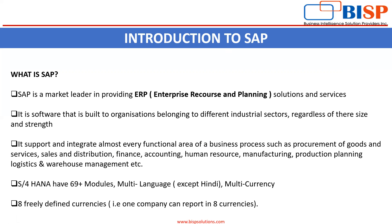SAP supports and integrates almost every functional area of business processes, such as procurement of goods and services, sales and distribution, finance, accounting, human resource, manufacturing, production planning, logistics, and warehouse management, etc. S4 HANA has 69 plus modules. It is multi-language and multi-currency. It has one key feature: eight freely defined currencies, meaning one company can report in eight currencies. For example, if we have foreign vendors, foreign investors, or a holding or group company that is a foreign company and they want reports in their currency, we can easily provide them with such reports.